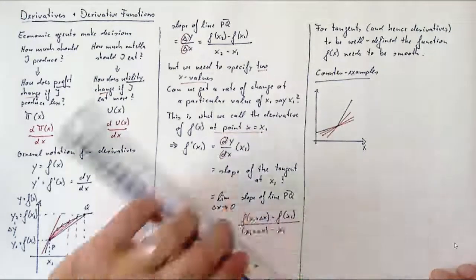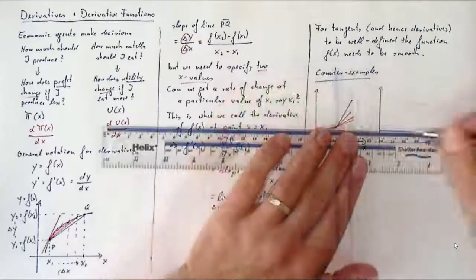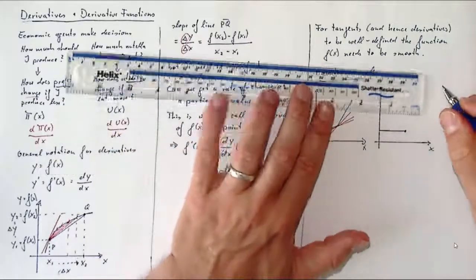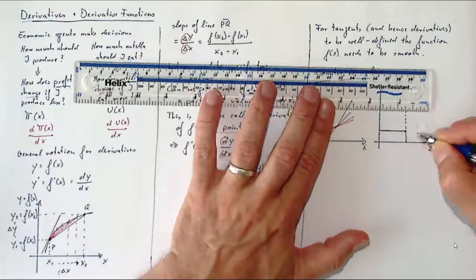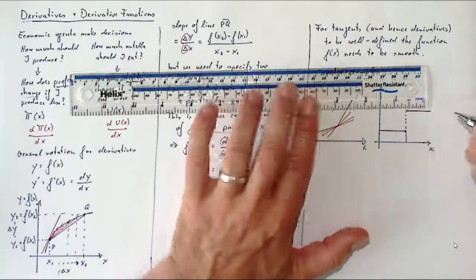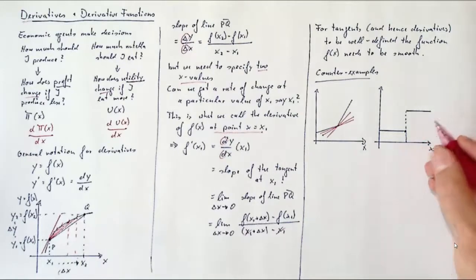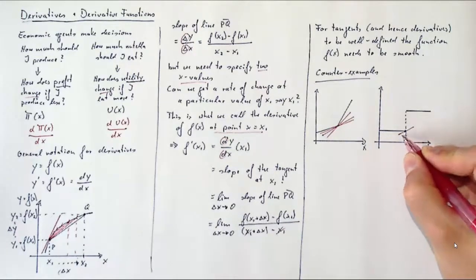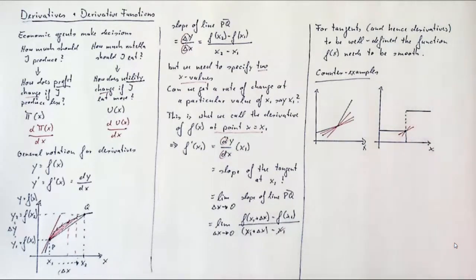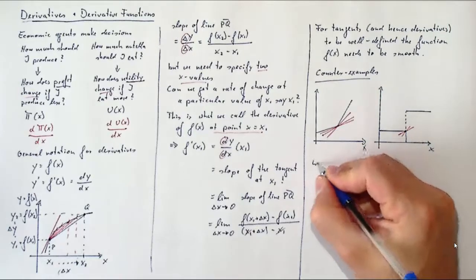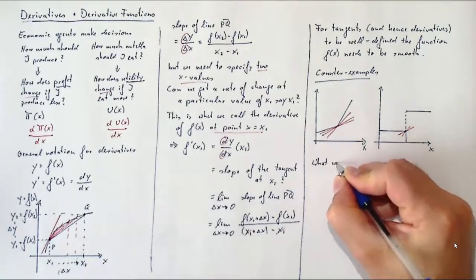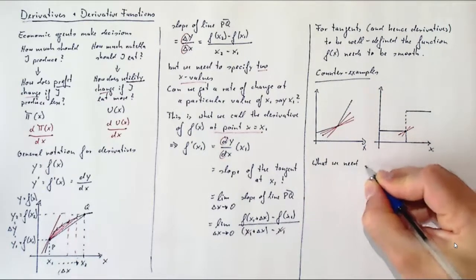The second example is one where we have what we call a step function—the simplest version of a flat function up to a certain point, and then the function makes a jump and moves on a different level. So again, at that step there is no clearly defined derivative. This function is missing a sense of smoothness at the point at which we want to evaluate the derivative.